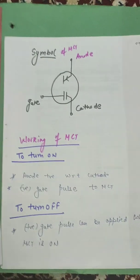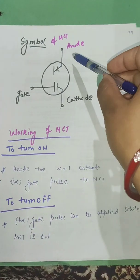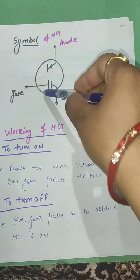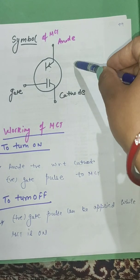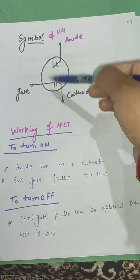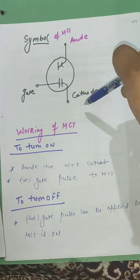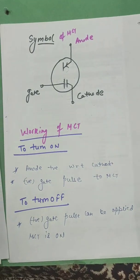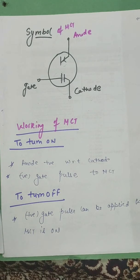This is a symbol of MCT. Here, one side it is anode to cathode and this one side is cathode, anode, cathode and gate. Gate terminal is SiO2 layer are there. This is a symbol of MCT and working to turn on. I have explained earlier.